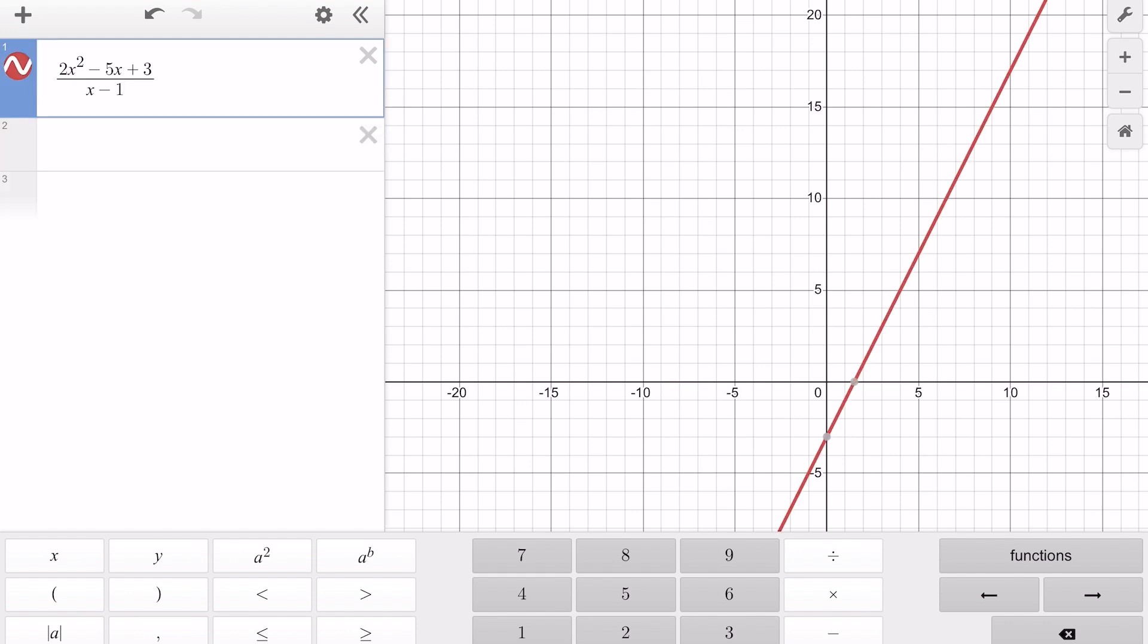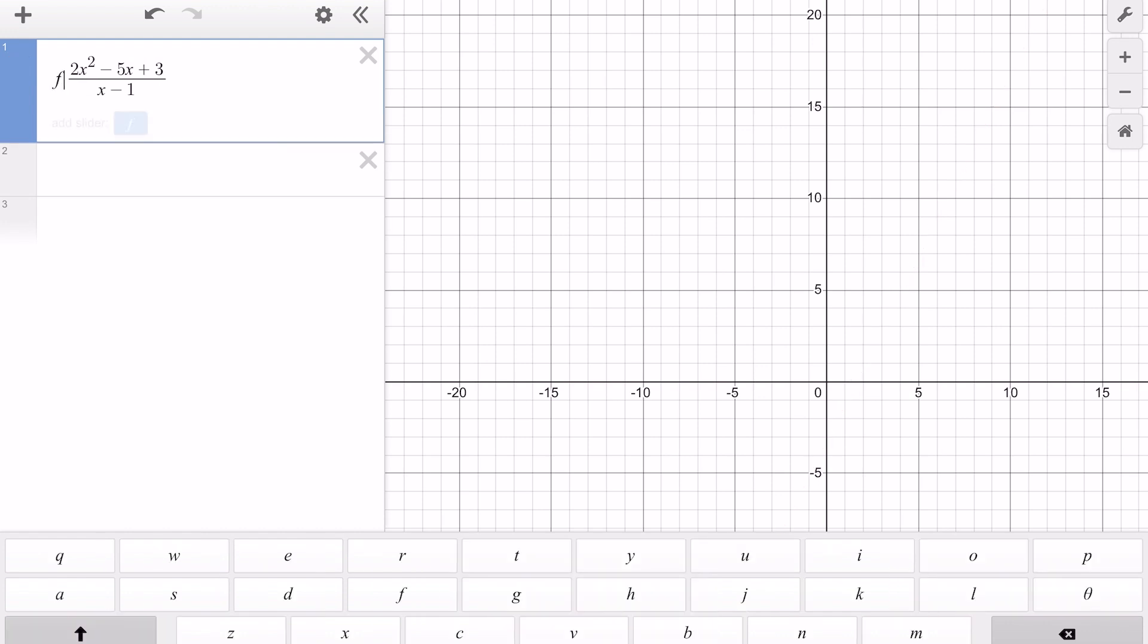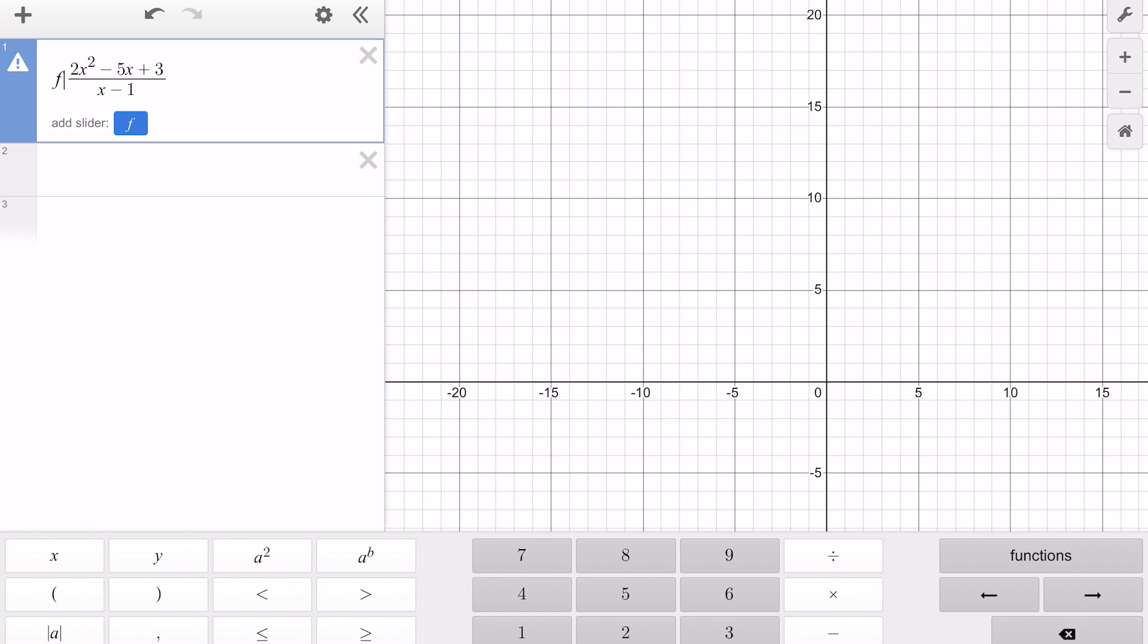And what we need to do here is, a lot of times we can just keep our equation floating like this, but I'm going to name my equation here f of x. And what I've taught you in some other lessons is that Desmos only takes x's and y's, and that is a little bit of a lie, because Desmos will also recognize f of x, but outside of those, it's only x and y.